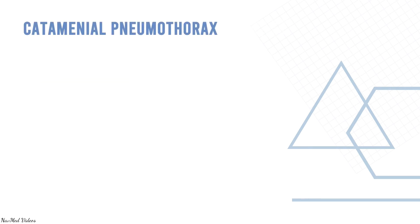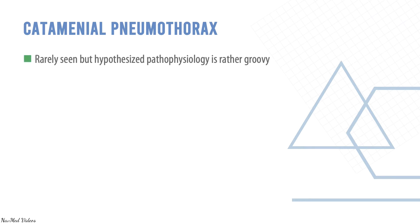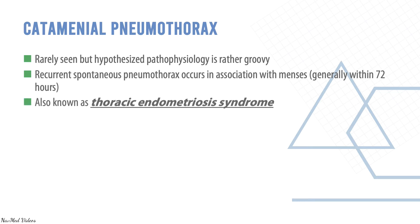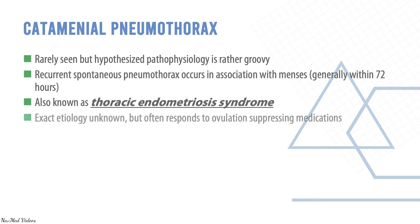Catamenial pneumothorax is rarely seen. The hypothesized pathophysiology involves recurrent spontaneous pneumothorax occurring in association with menses — also known as thoracic endometriosis syndrome. The exact etiology is unknown, but it often responds to ovulation-suppressing medications.